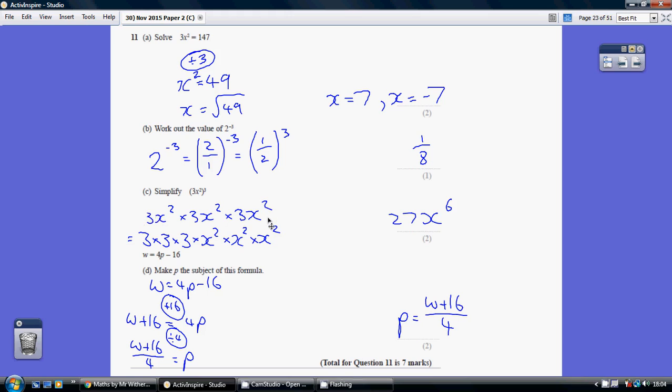Now this is just a whole bunch of stuff being multiplied together so we can think of the 3 3's being at the front. 3 times 3 times 3 times x squared times x squared times x squared. Well 3 3's are 9, 9 3's are 27.